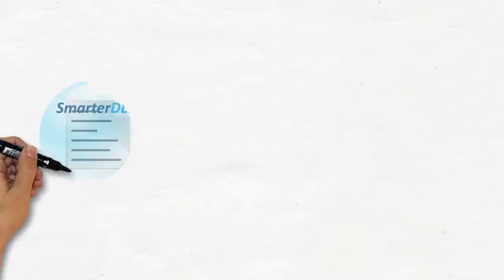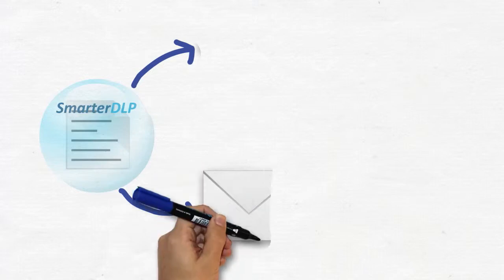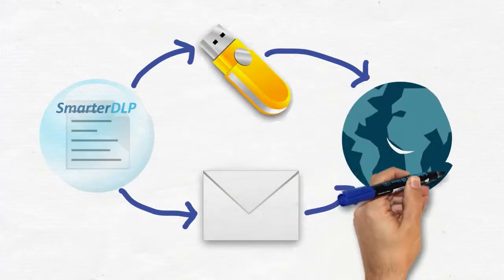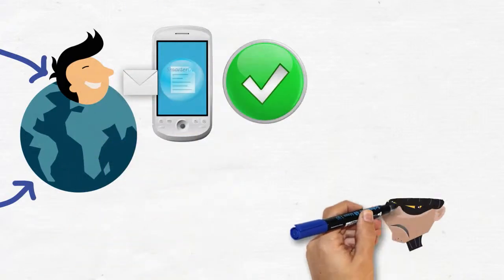The data then becomes secured as a wrapper is placed around each file. So when a file gets emailed or loaded onto a USB thumb drive, or accessed on a device anywhere in the world, only the people who have permission can open and access it.